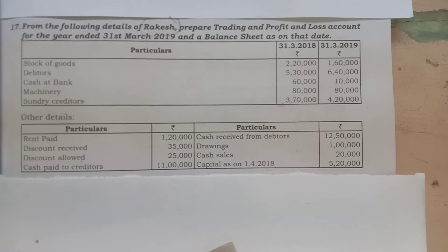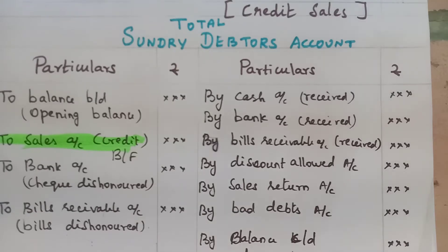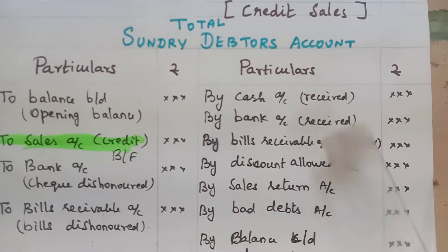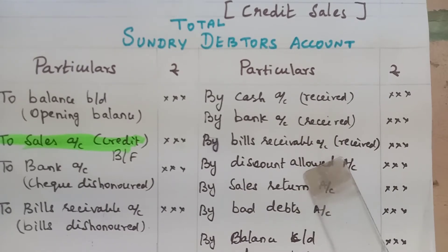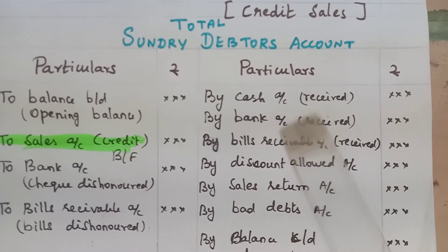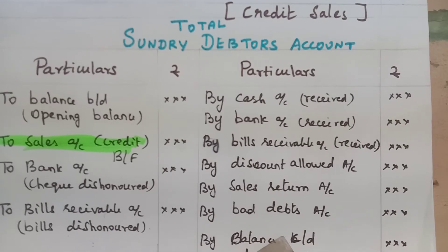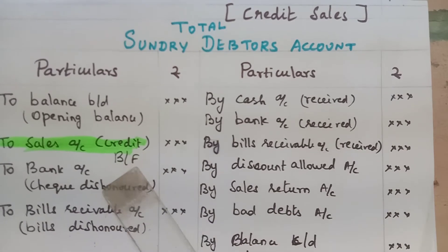That's why we are preparing the trading P&L balance sheet. Now we will do the total debtors account. This is the total debtors account - this is the format. This is the opening balance, which is an asset, and the closing balance. On the credit side: cash received, bills received, discount allowed, sales return, bad debts. The balancing figure is credit sales.